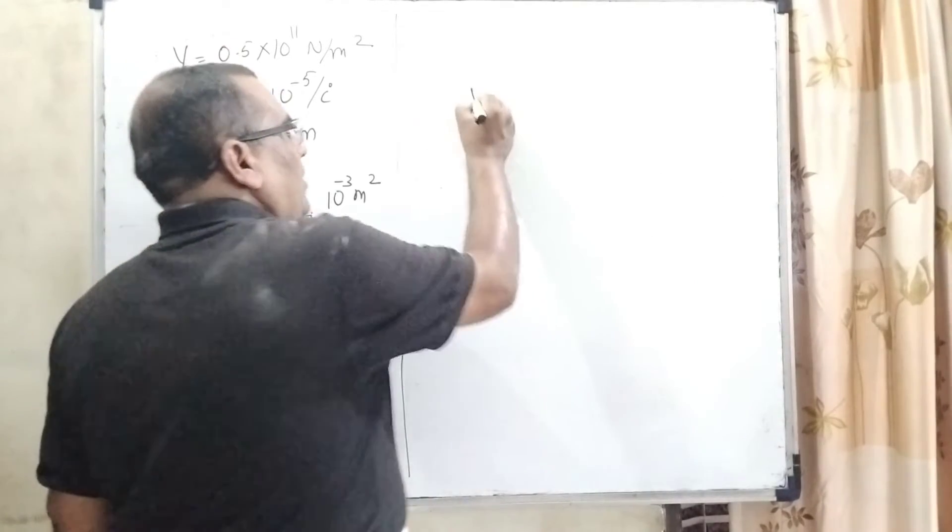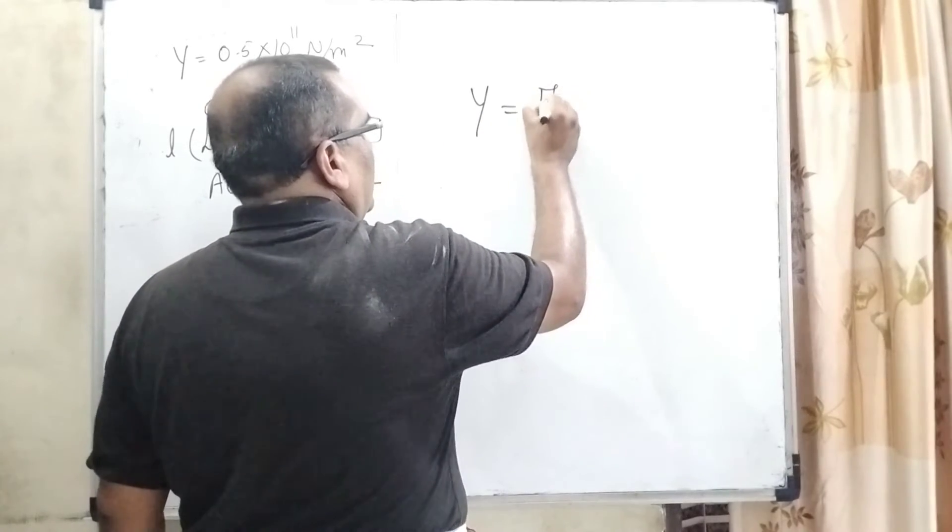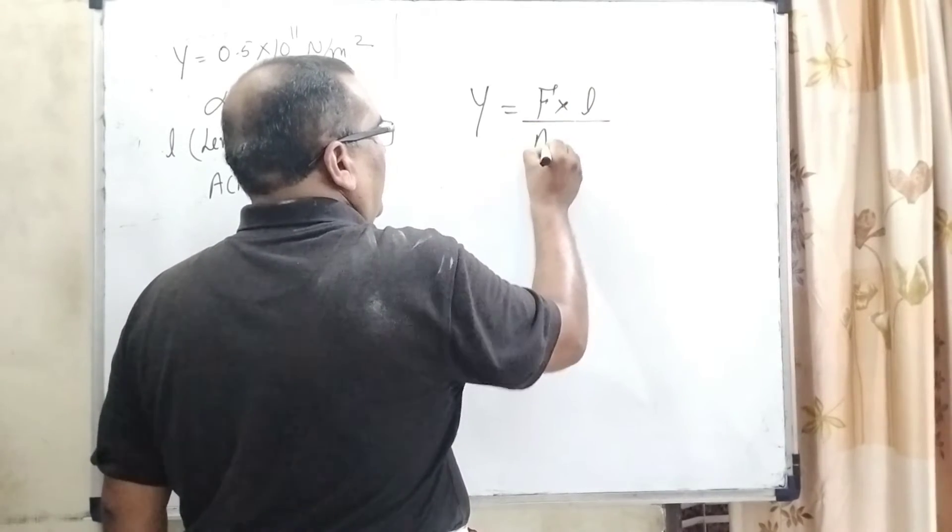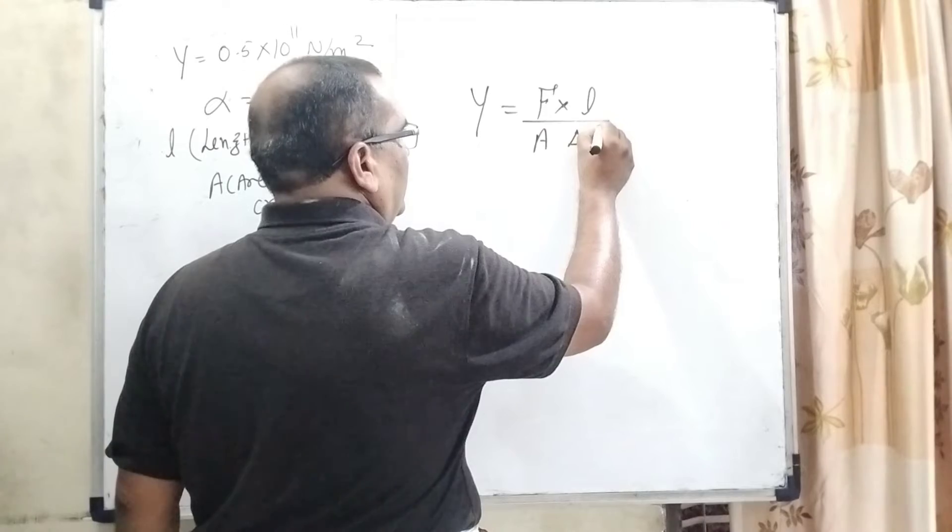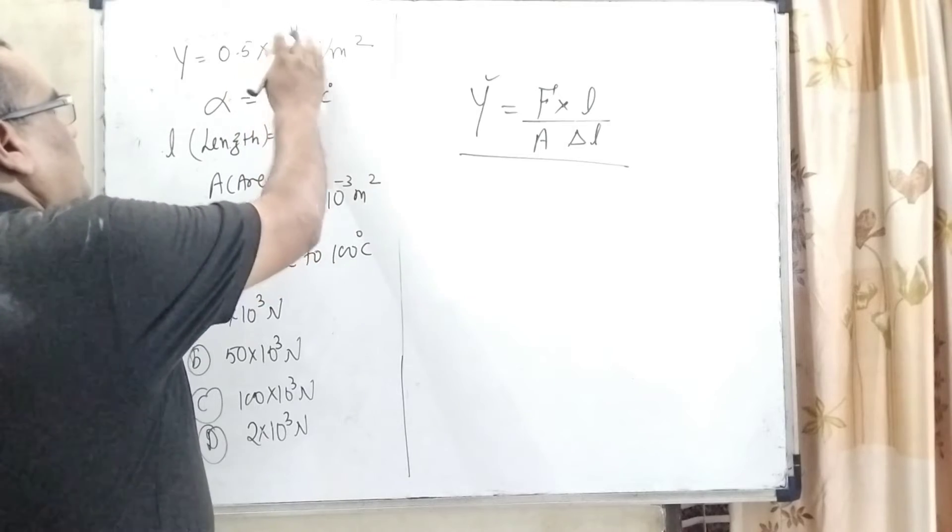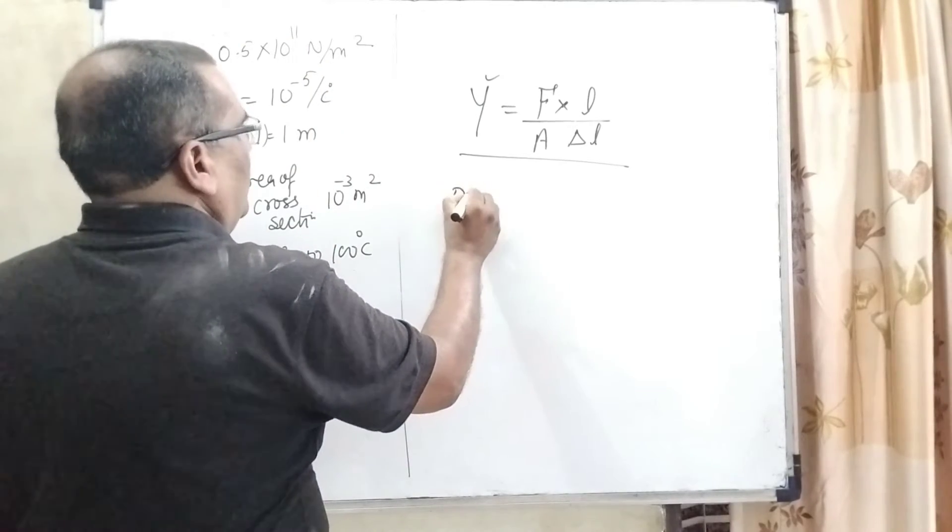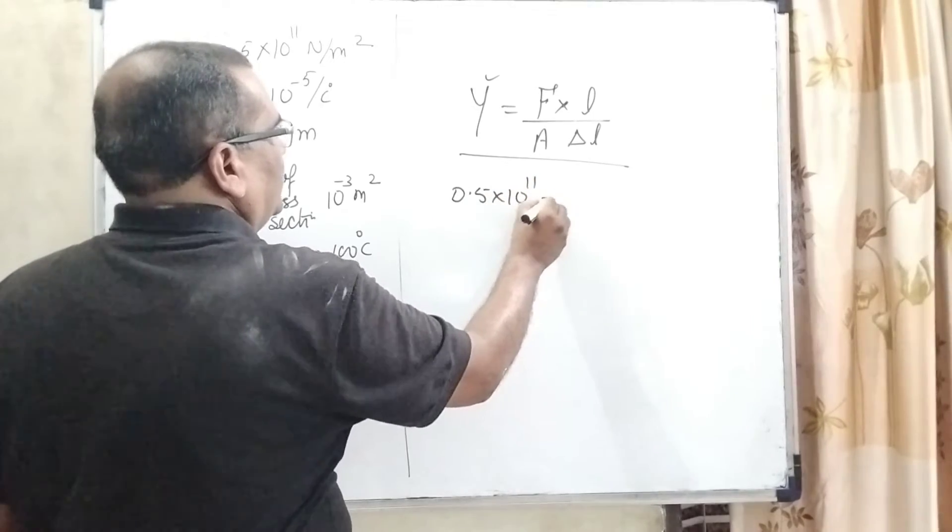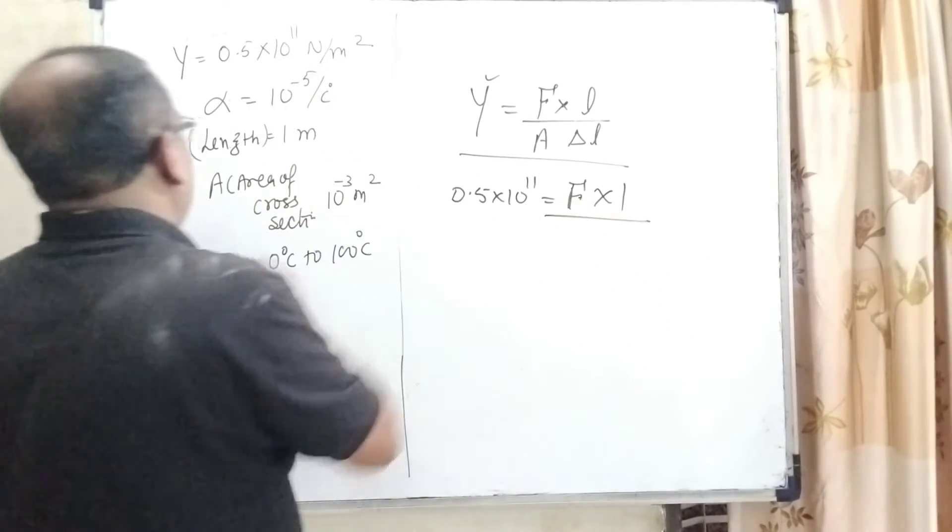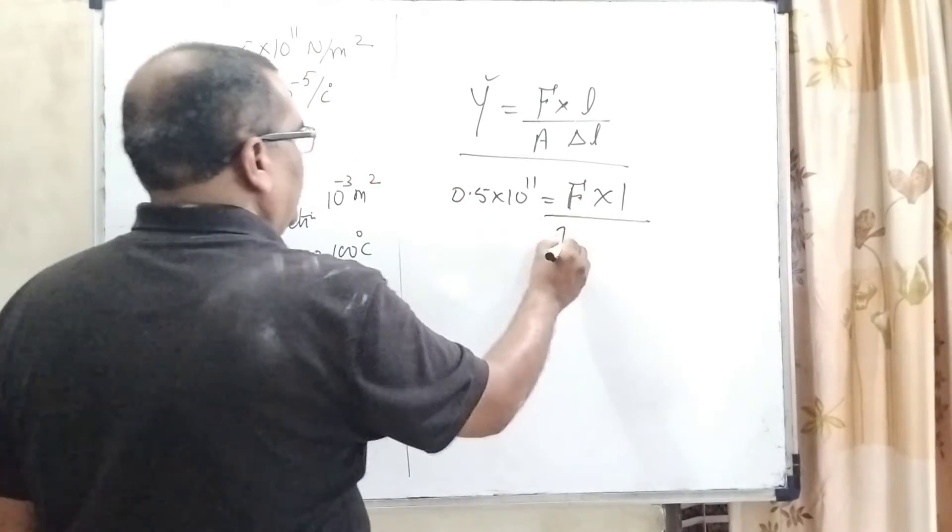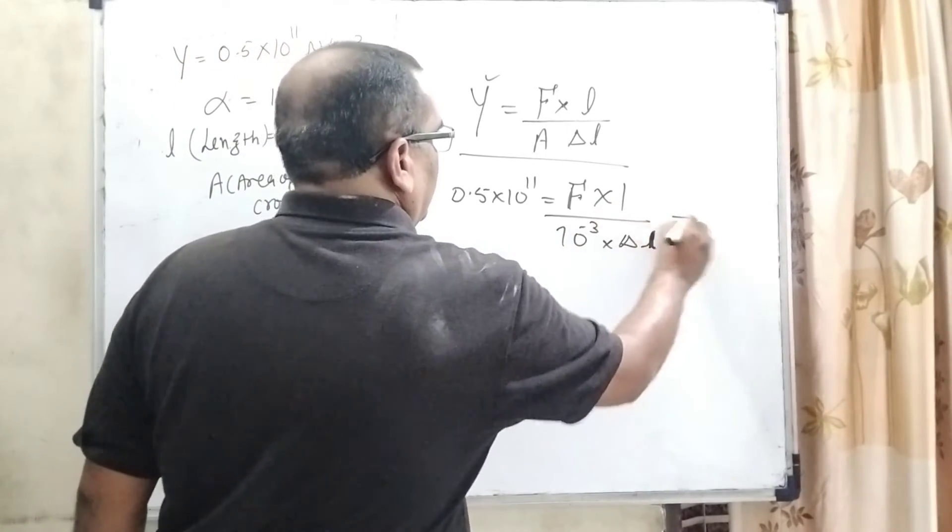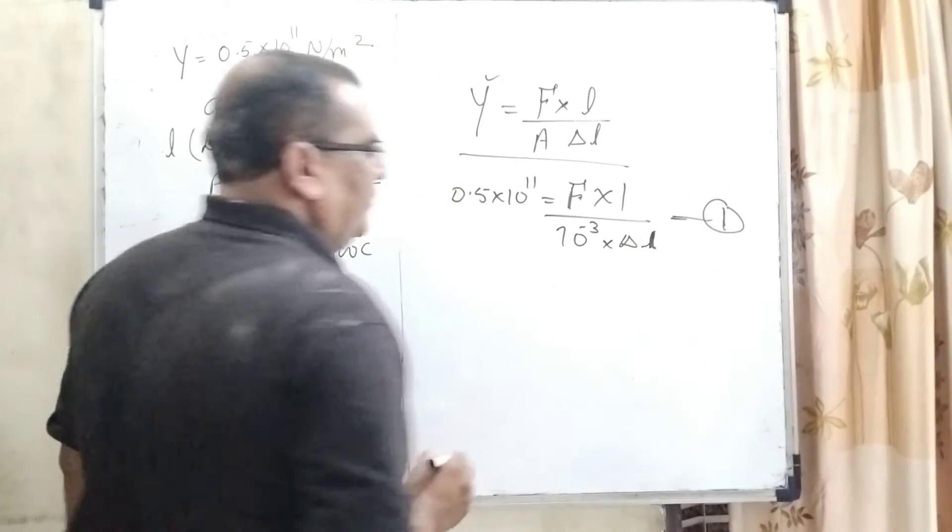Now, as we know the formula of Young's modulus: Y equals F into L over A into delta L. Here, Young's modulus is given as 0.5 into 10 raised to power 11. We have to calculate this force F. Length is given as 1 meter. Area of cross-section is given as 10 raised to power minus 3, and delta L we have to calculate. Let's call this equation number 1.